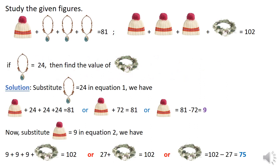Study the given figures. We see two equations are given. First is cap plus 3 necklace equal to 81, and second is 3 caps plus 1 hairband equal to 102. Now if necklace equal to 24, then find the value of hairband.